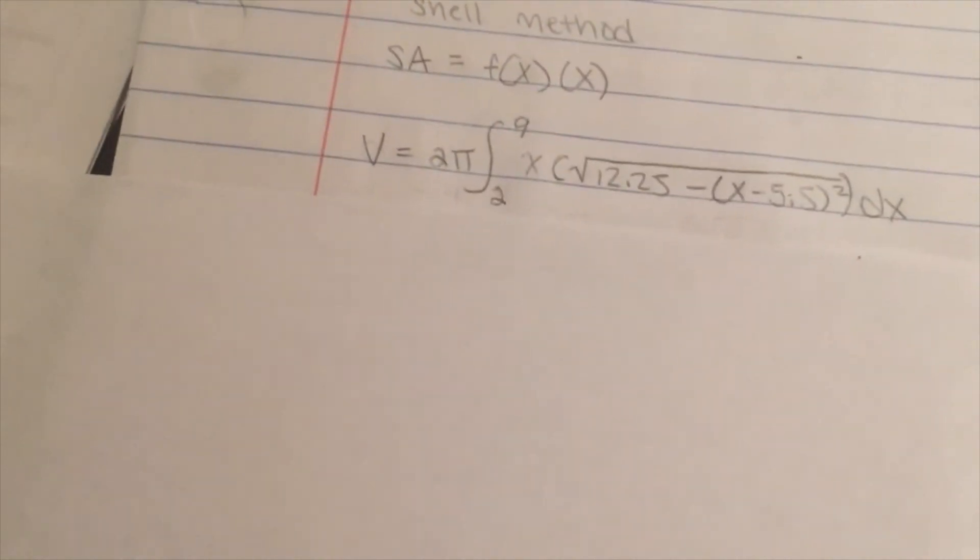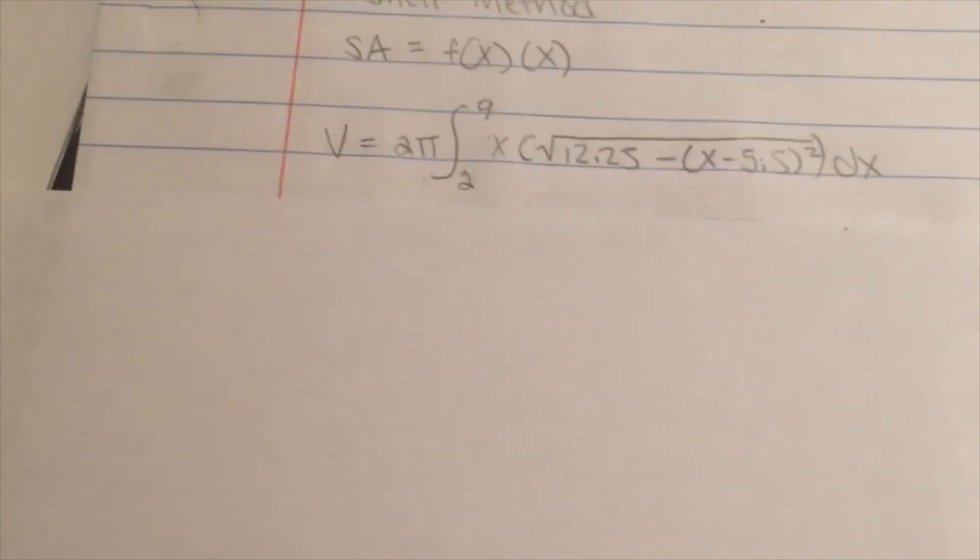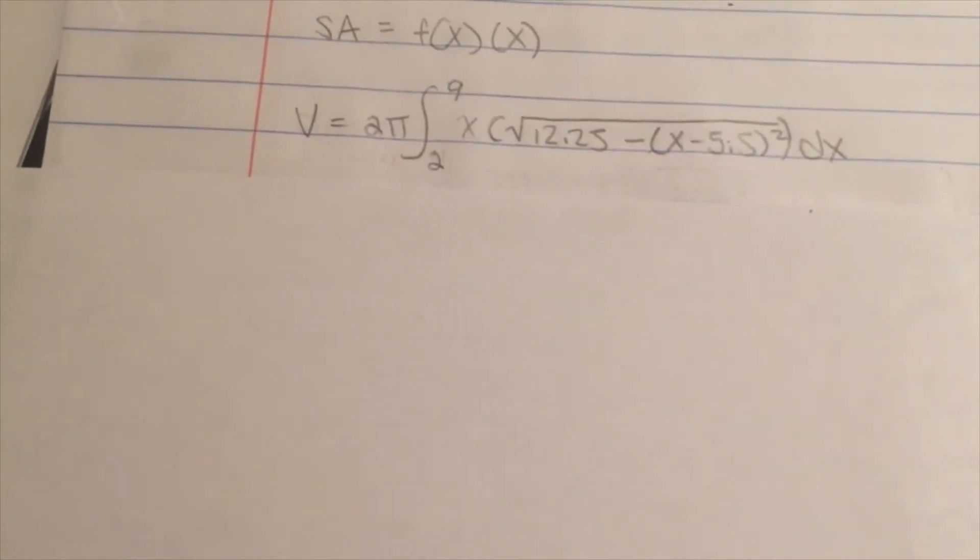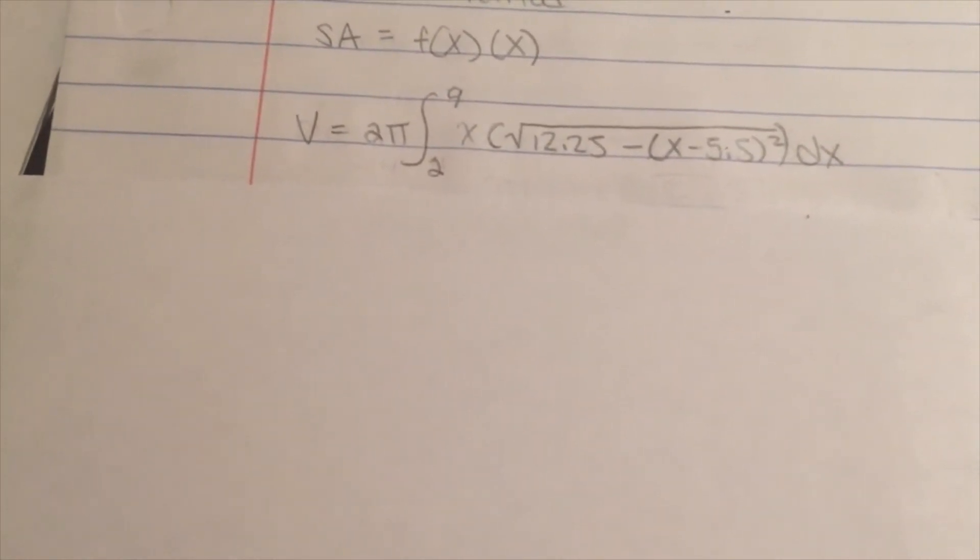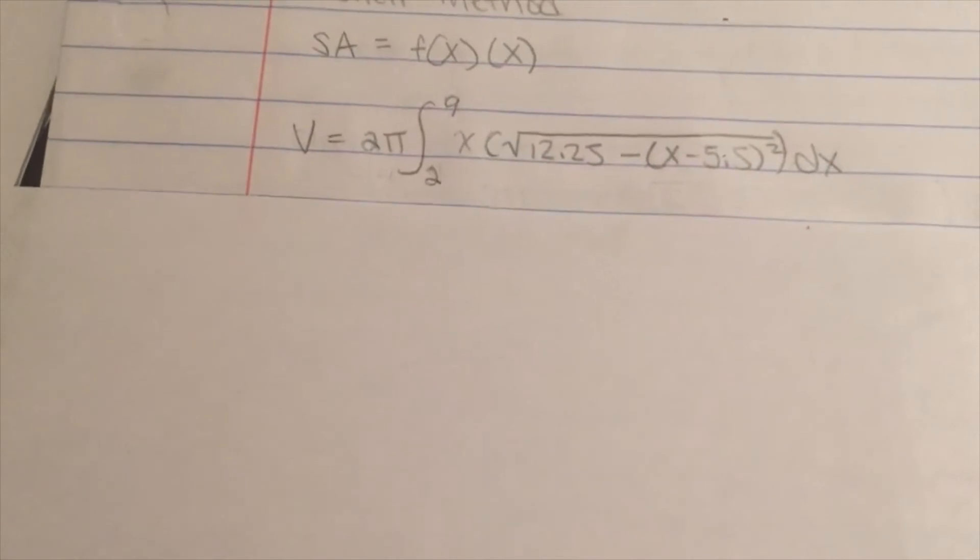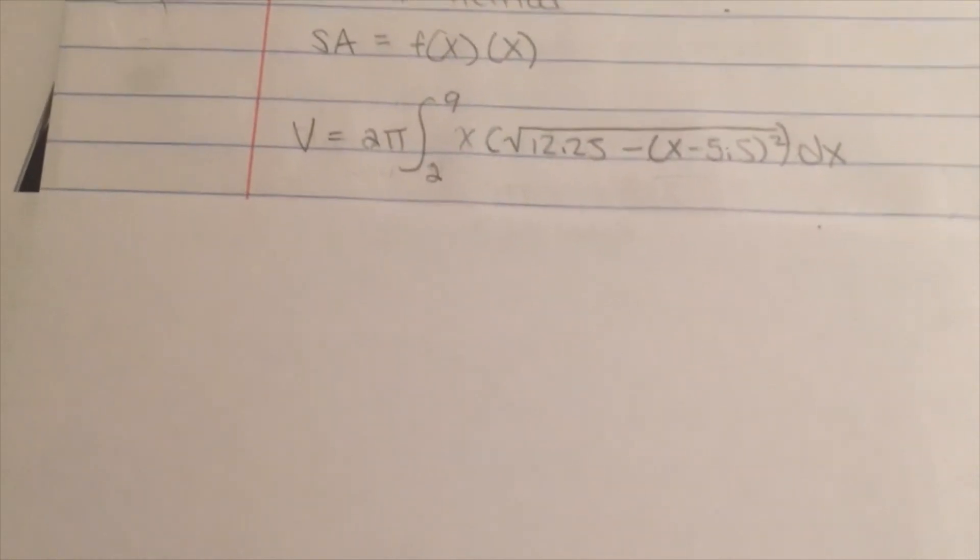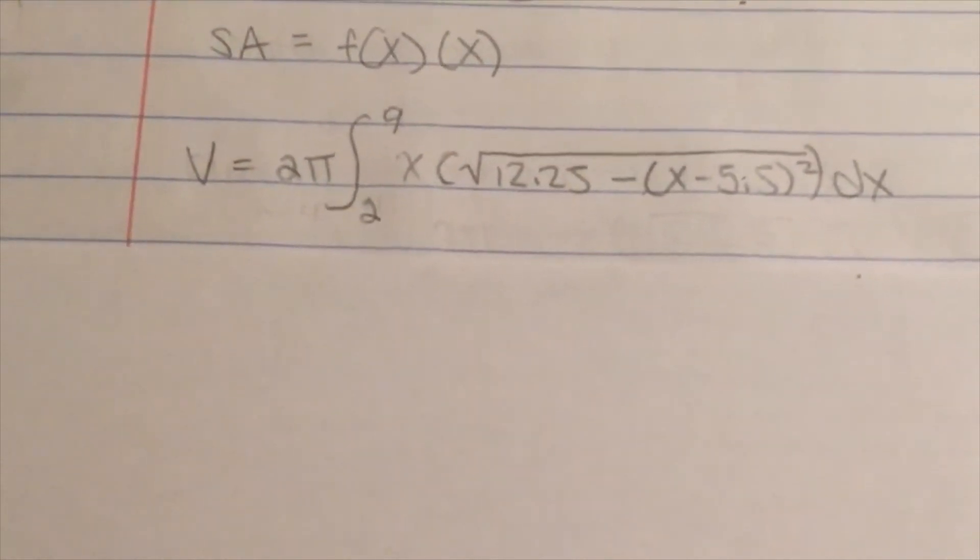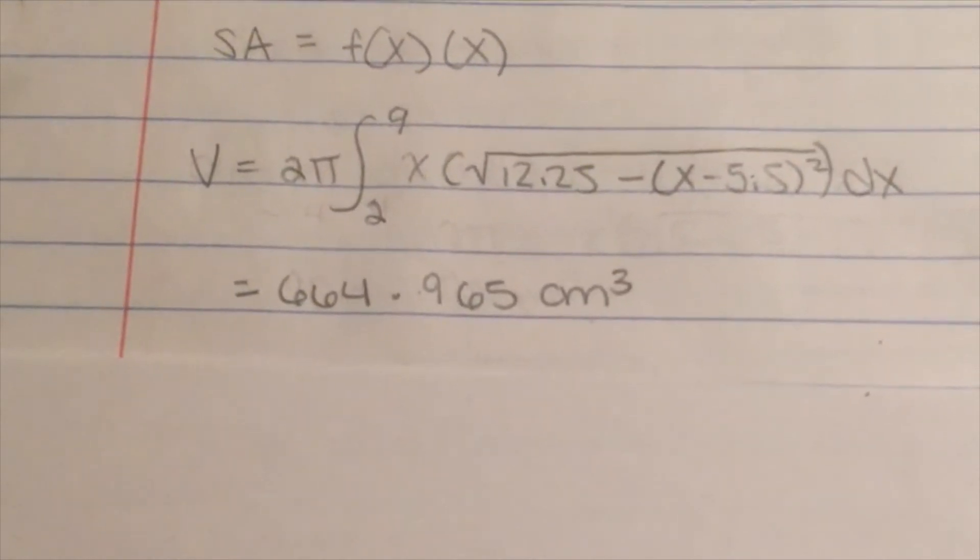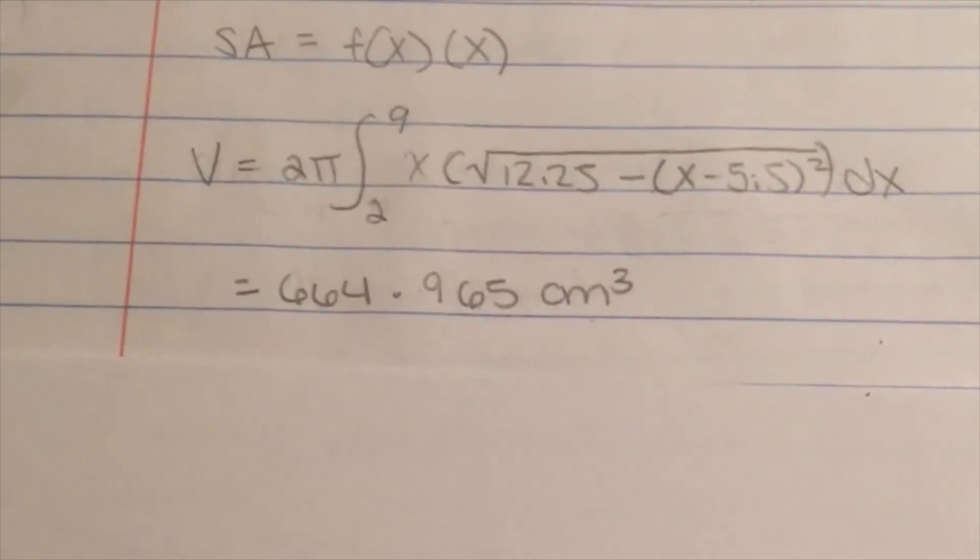To do this, we set up the integral volume equals 2 pi times the integral from 2 to 9 of x times the square root of 12.25 minus x minus 5.5 squared dx. We can then plug this into our calculator to find that the volume of the bundt cake was approximately 664.965 cm3.